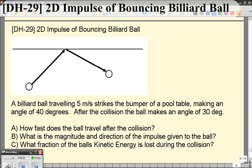Hello and welcome to video 29. In this problem we have a billiard ball that comes and strikes the edge of a pool table, the bumper, and bounces. But the angle that it comes in at, which I'll call theta, meaning the angle before, is 40 degrees. And the angle that it bounces at is a little less, at 30 degrees.